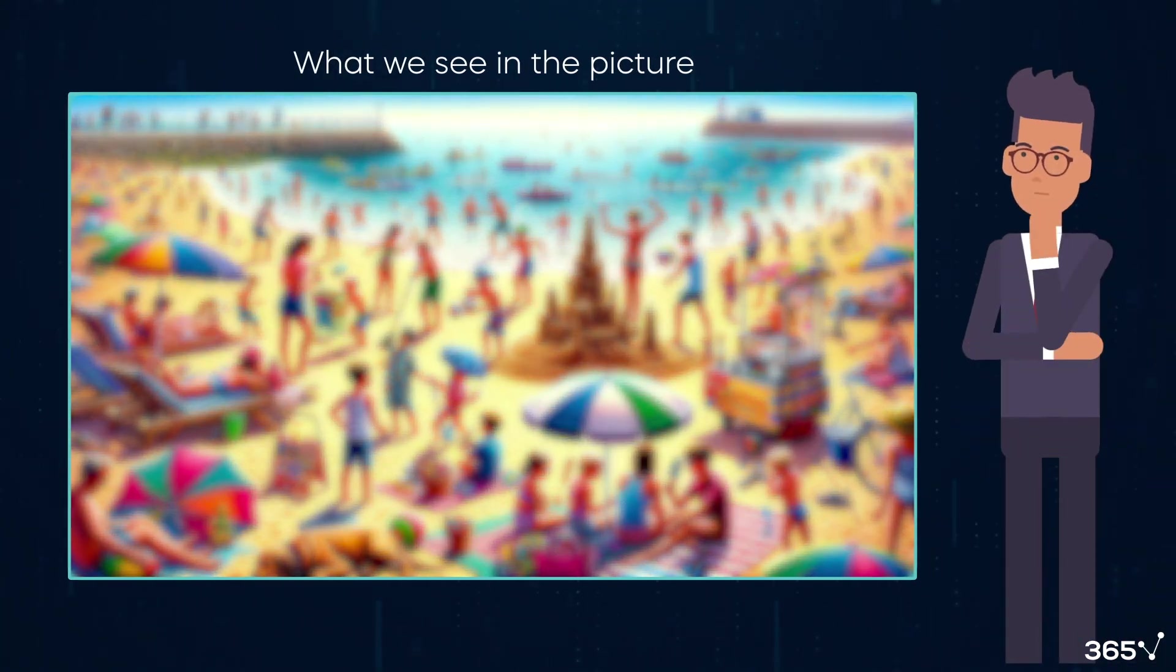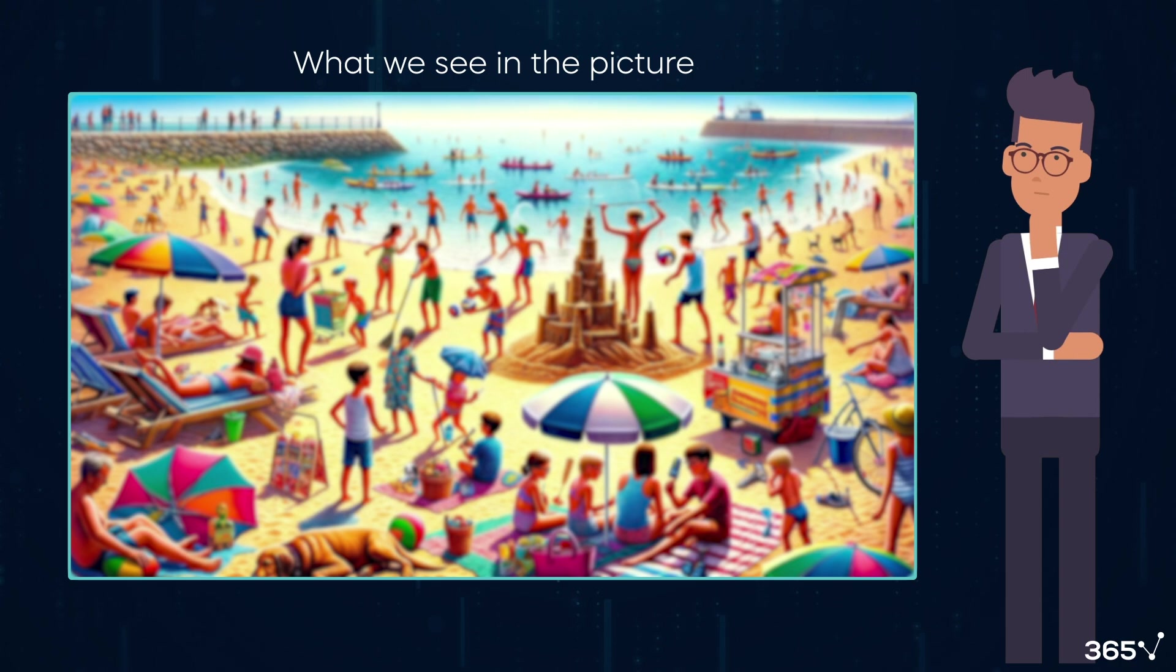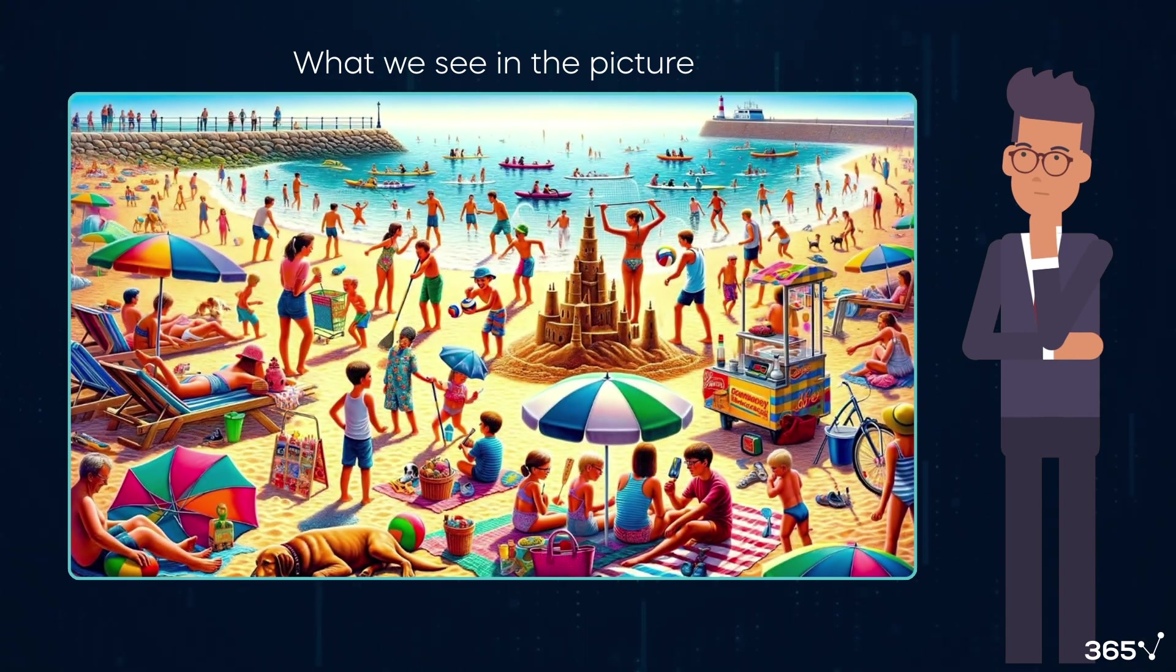Our brain processes information in various phases and at varying depths. Initially, viewing an image provides a raw, broad impression that presents insights into the scene's context. The more time and attention we devote to details, the more information and subtleties we can process and observe.